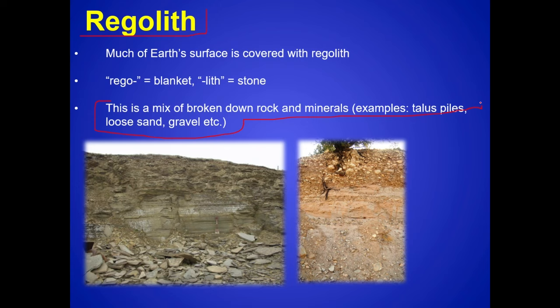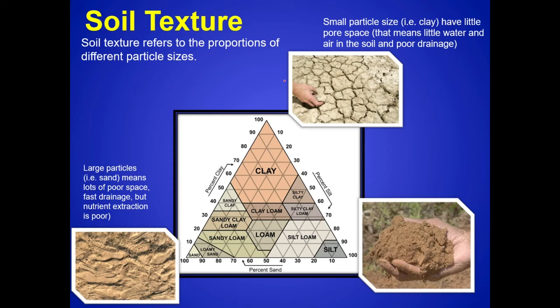Examples of regolith include talus piles, loose sand, and gravel — you can think of it as similar to sediment. The word regolith comes from 'rego' meaning blanket and 'lith' meaning stone. So it's a stony blanket that covers much of Earth's surface. When you start to mix that with organic matter, then we call it a soil.